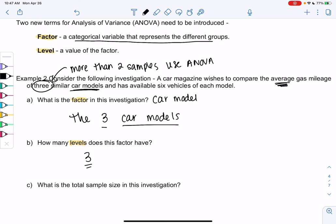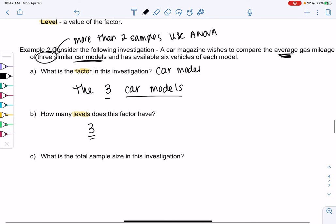And then the total sample size, it's not six or three. We have three groups. So levels represent the groups, factors are the description of the group, and then there's six in each group. So the total sample size would be 18.